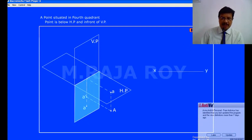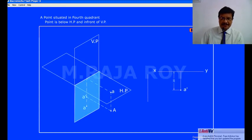Now observe how I am transferring these points to the XY lane. That is front VP and that is top VP.